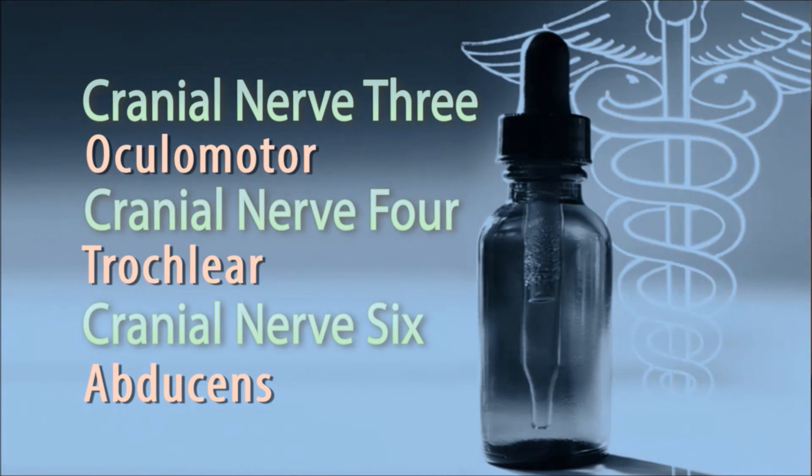I'm now going to test the ocular motor, trochlear, and abducent nerves, which all control the extraocular muscles and as such are tested together. As part of this, we will also test the accommodation reflex.